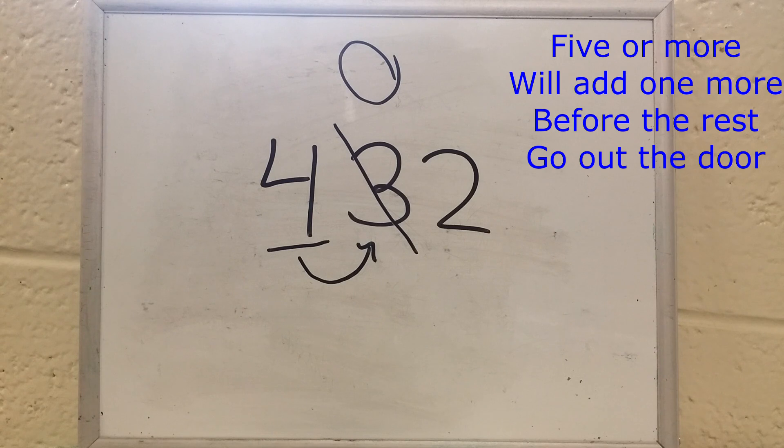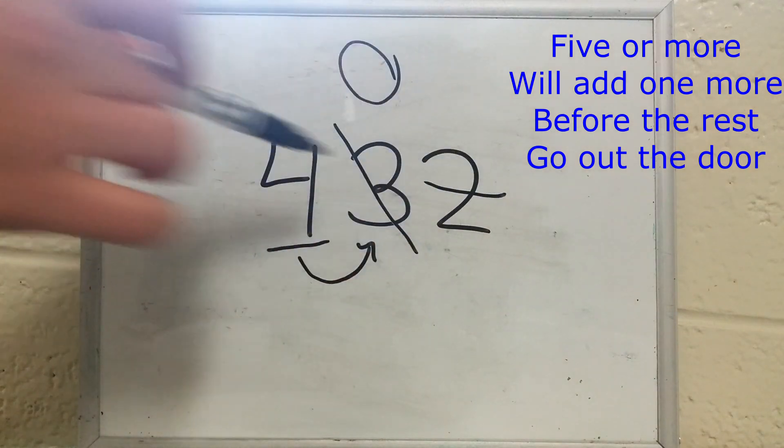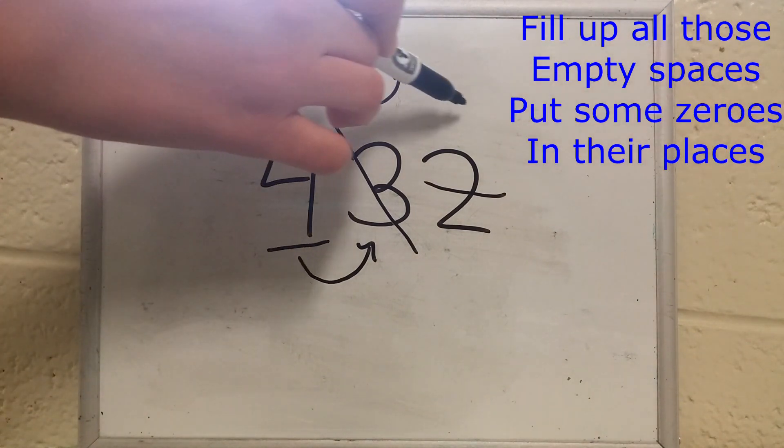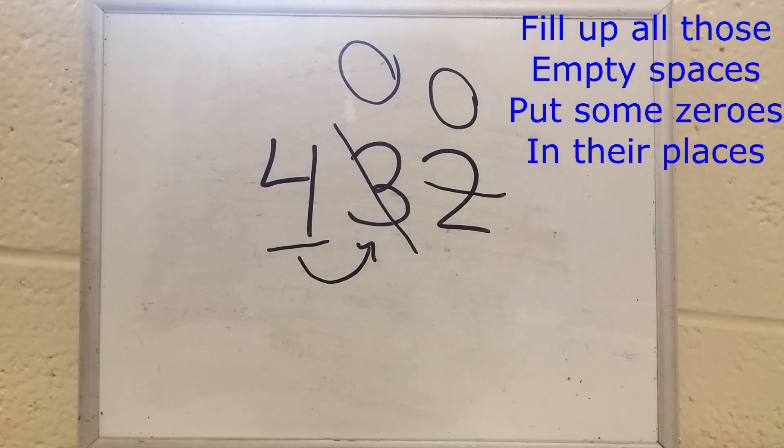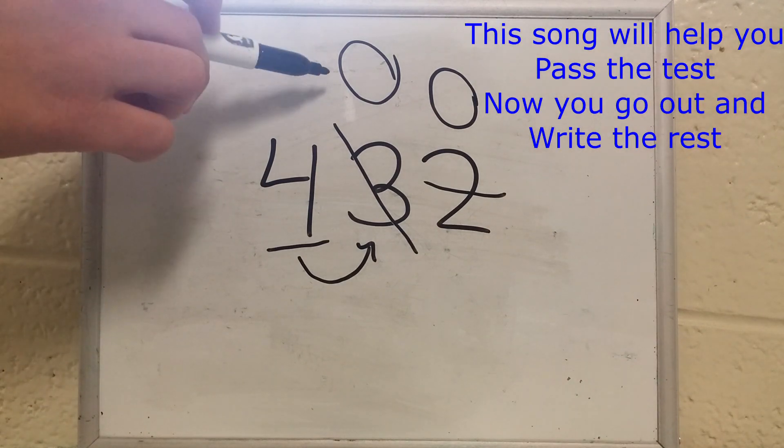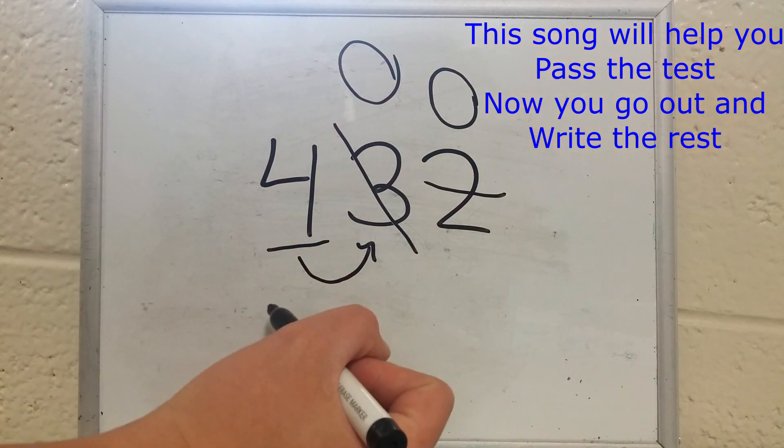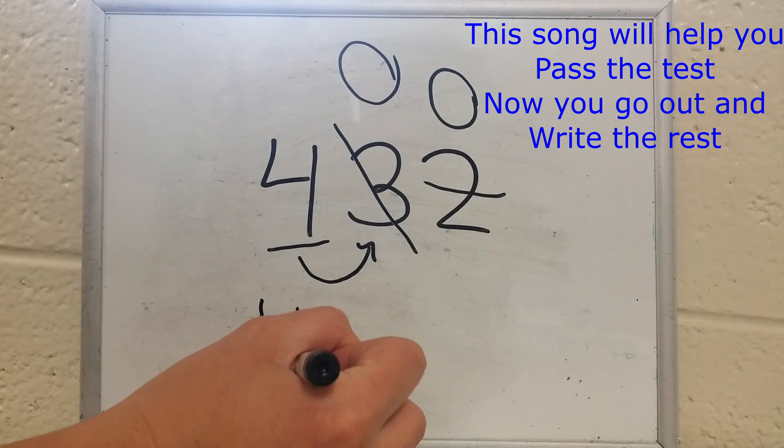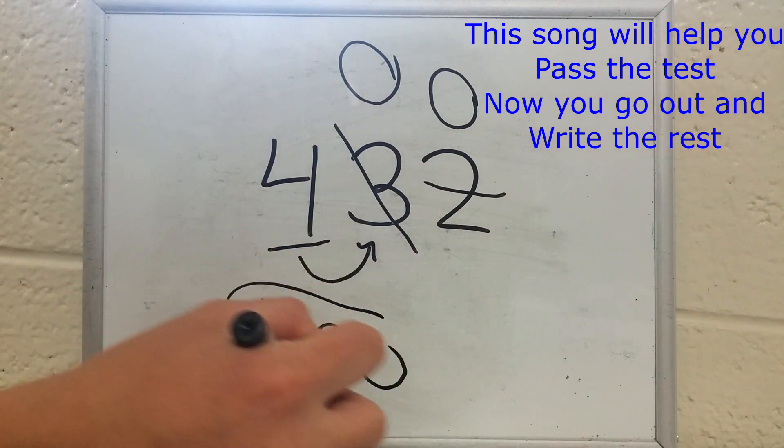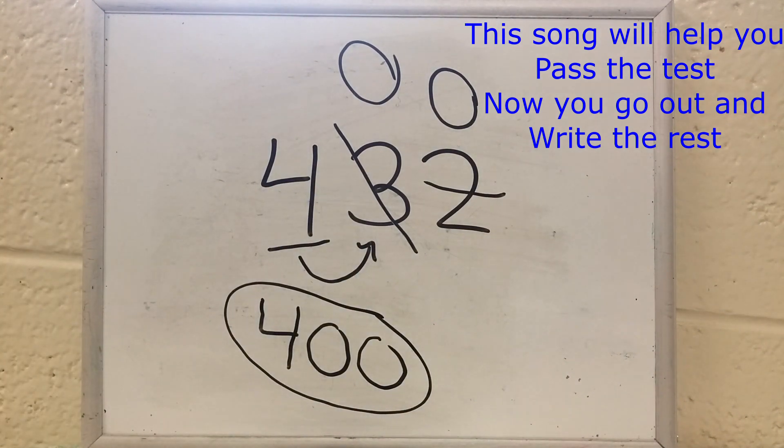Five or more, we'll add one more. Before the rest go out the door. We already took care of our four or less number, so we will let the rest go out the door. Let's cross them out so we are left with empty spaces. Fill up all those empty spaces, put some zeros in their places. There's the zeros. This song will help you pass the test. Now you go out and write the rest. Now it's time to write our final number. We'll take the numbers that are not crossed out in order. That gives us our answer, 400.